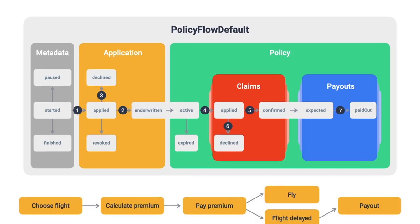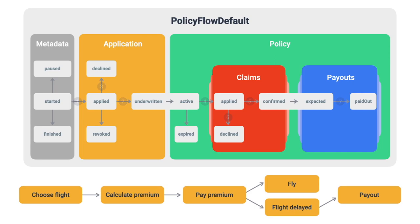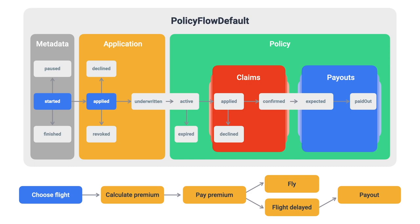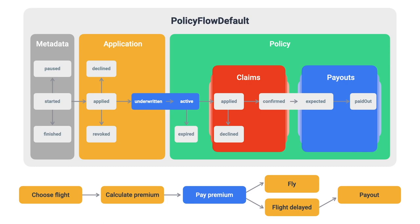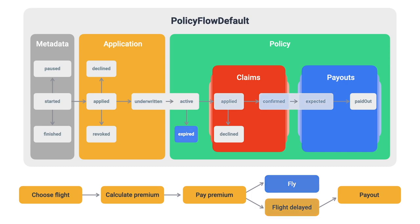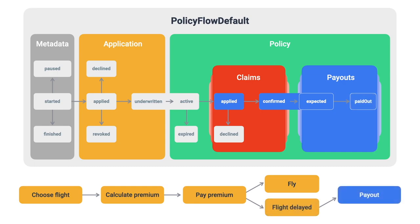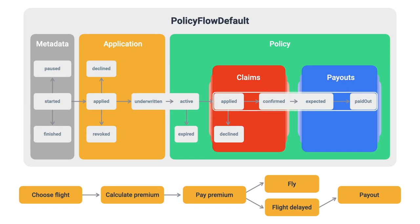For a better understanding of the policy lifecycle, let's take flight delay as an example. After a flight is chosen, the policy is started and the state changes to applied. The underwriting is done by the oracle. By paying the premium, the policy is activated and the state changes to active. If the flight is not delayed, the state of the policy changes to expired. If it is delayed, there will be a claim and then an instant payout — multiple steps done in one. This differs depending on the insurance product; for example, the crop insurance product has additional sub-steps because the claim must be examined before payout.